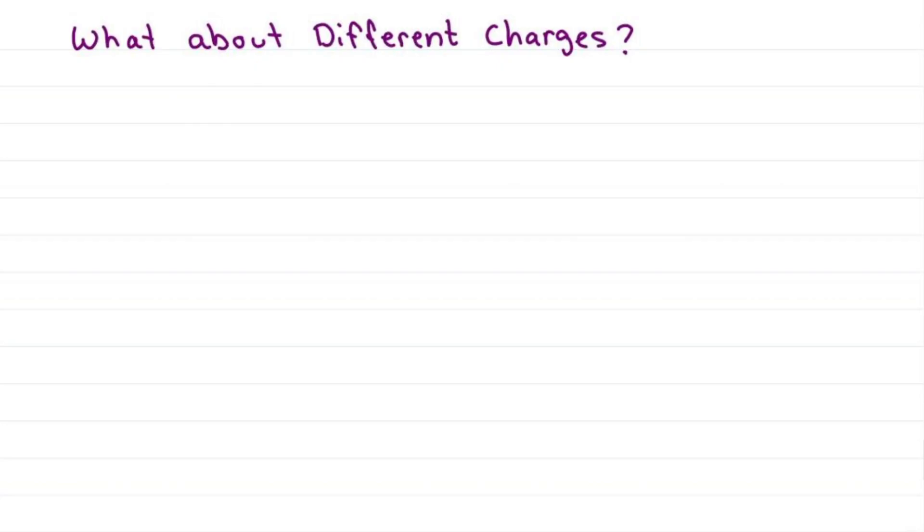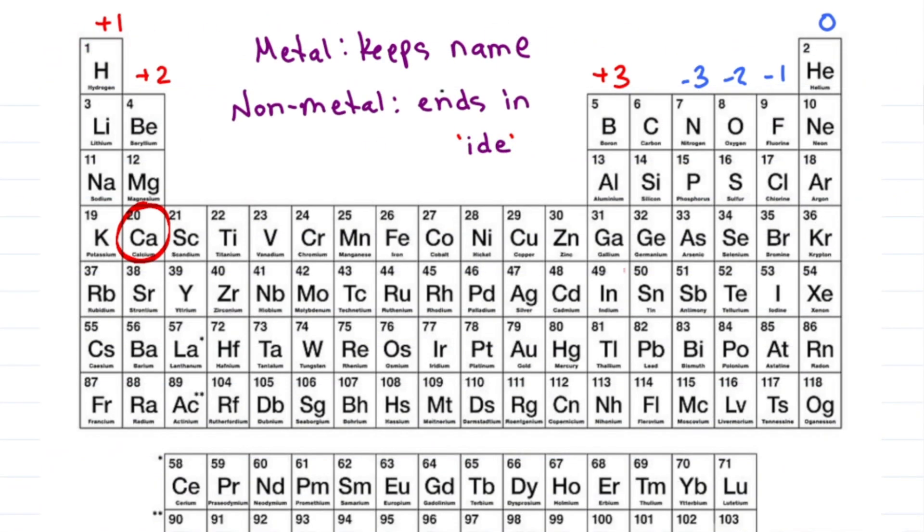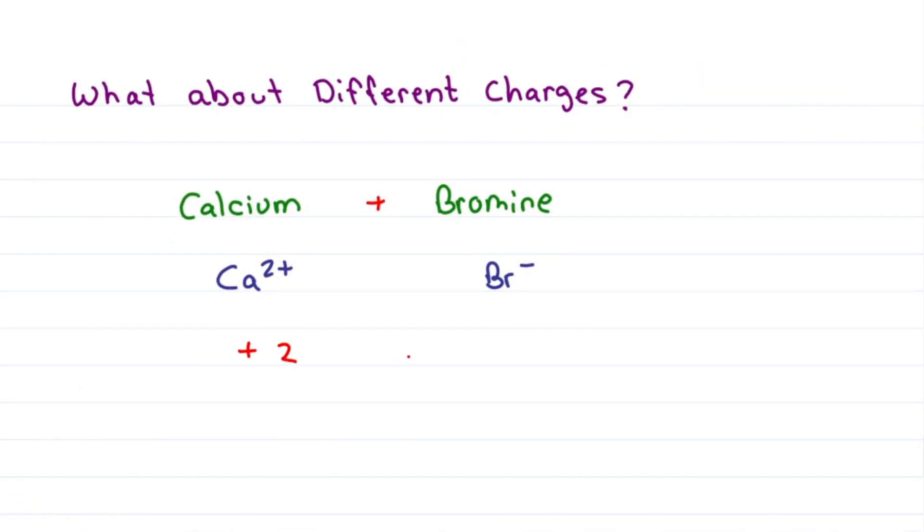What if the charges are not the same? For example calcium and bromine. Calcium is plus 2, bromine is minus 1. If I put them together I get plus 2 minus 1 for a net charge of plus 1. But ionic compounds have to be neutral, so how do I get zero?